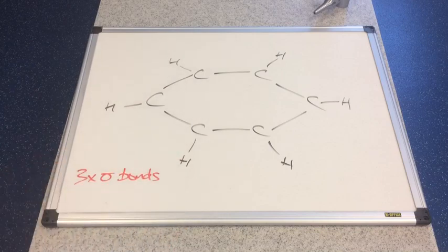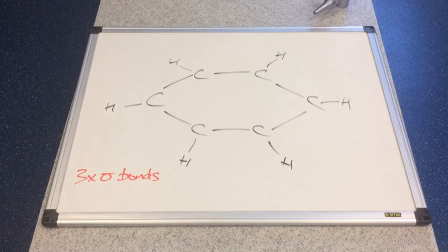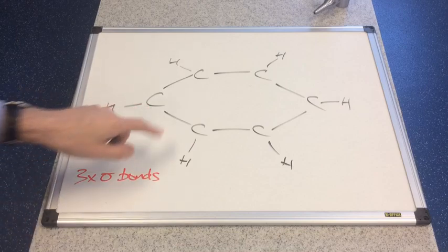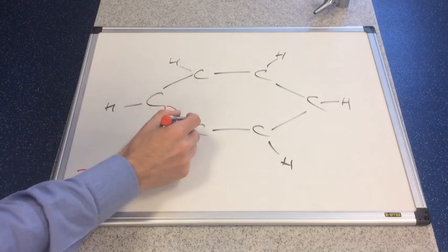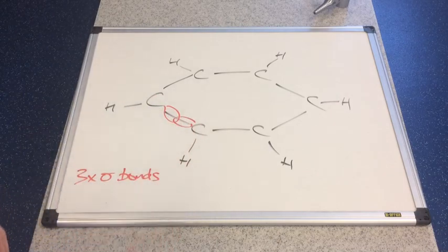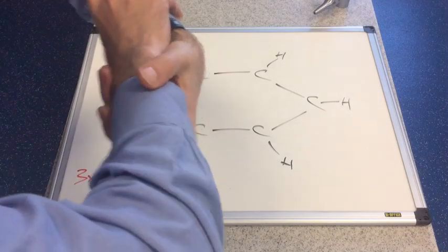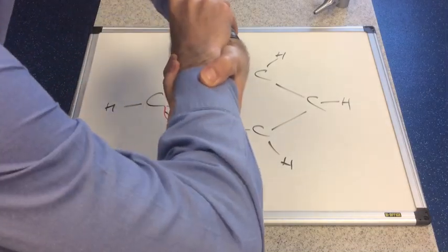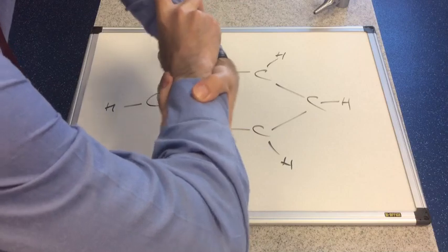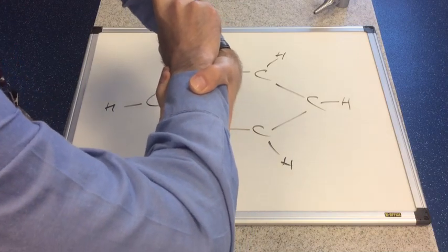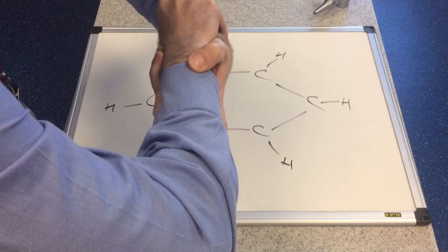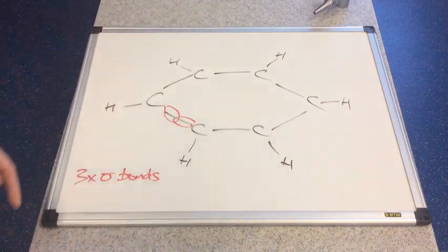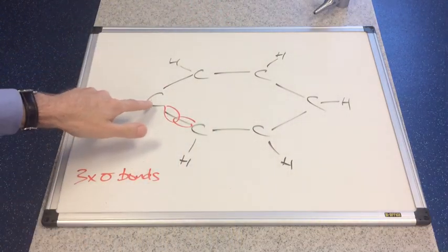Now we learned about sigma bonds at AS. Sigma bonds are where the orbitals that the electrons live in overlap sort of end on, so if I just draw the orbital here and here, you get this very strong overlap of orbitals so the electron pair is very strongly covalently bonded. We get three sigma bonds for each carbon.